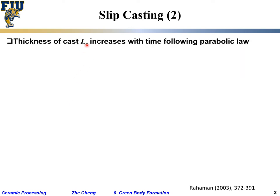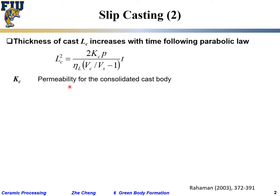The thickness of your cast — the solidified layer — increases with time following a parabolic relationship, like diffusion: l² equals a constant times t, or l equals the square root of a constant times t. This constant involves the permeability of the already consolidated cast. The part nearest the wall packs first at higher density and becomes a barrier layer for continued solvent motion.